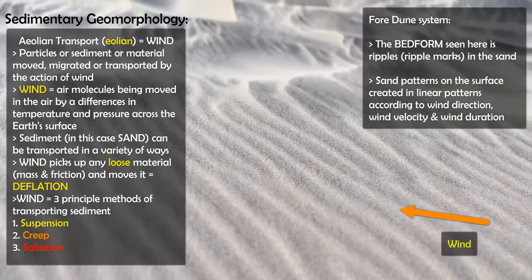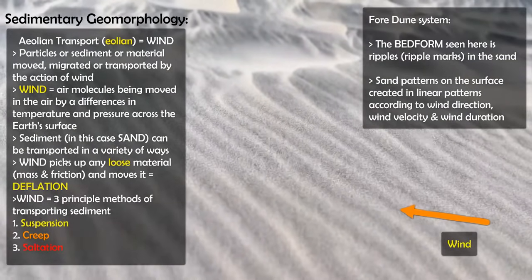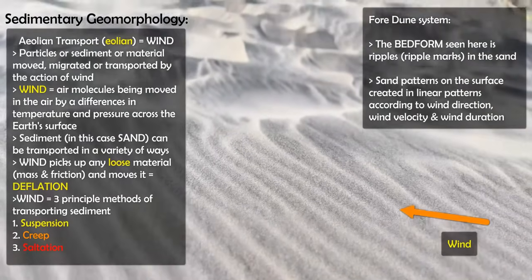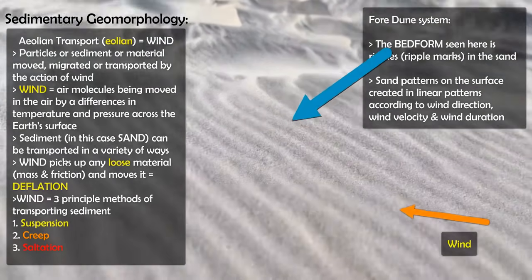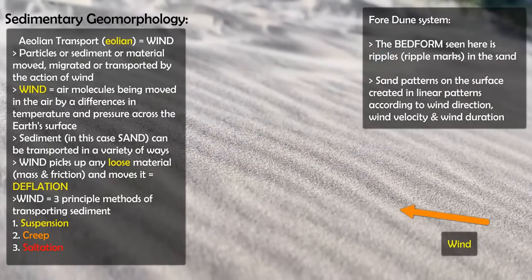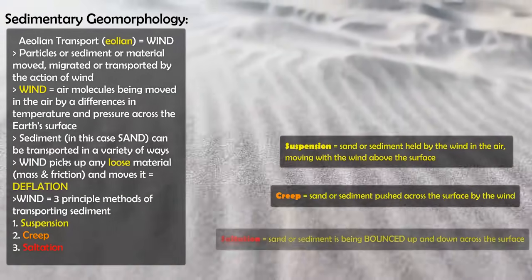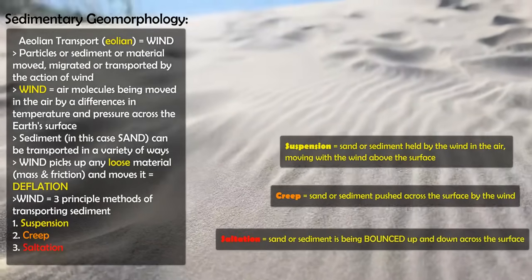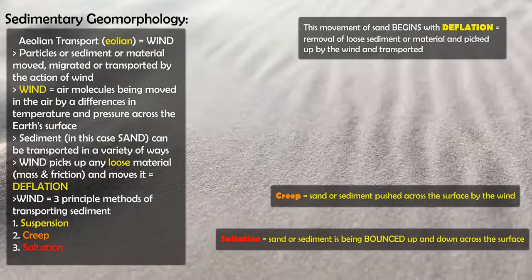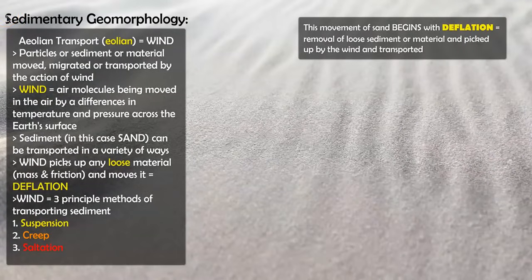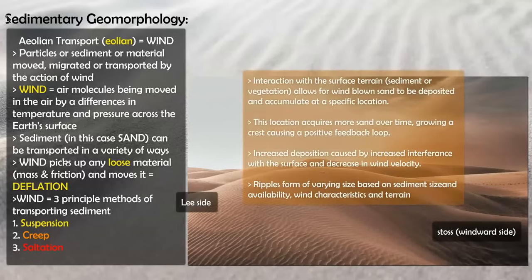As you can see, the sand is being moved by the wind. The formations or patterns created on the Earth's surface in this sandy environment are called bedforms. You see the wind moving the sand through creep, saltation, and suspension, forming these long or straight-line ripples through the sand. There's an interaction with the ground — friction causes sand particles to stop and build up, creating a rise and then sink of the surface, which forms these ripples.